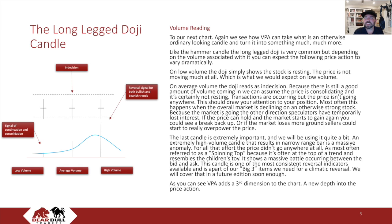Like the hammer candle, the long-legged doji is very common, but depending on the volume associated with it, you can expect the following price action to vary dramatically. On low volume, the doji simply shows the stock is resting — the price is not moving much at all, which is what you would expect on low volume. On average volume, the doji reads as indecision. Because there is still a good amount of volume coming in, we can assume the price is consolidating and is certainly not resting. Transactions are occurring, but the price isn't going anywhere. This should draw your attention to your position. Most often, this happens when the overall market is declining on an otherwise strong stock.